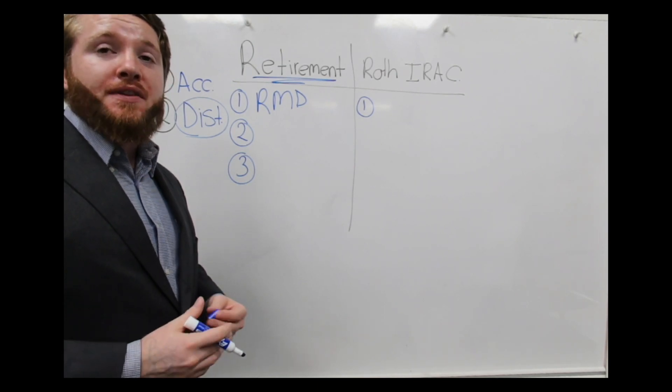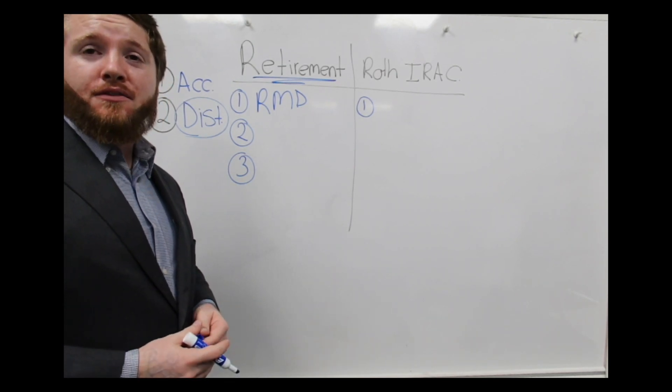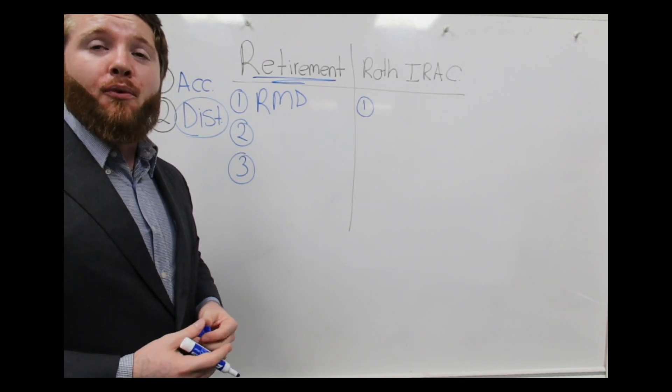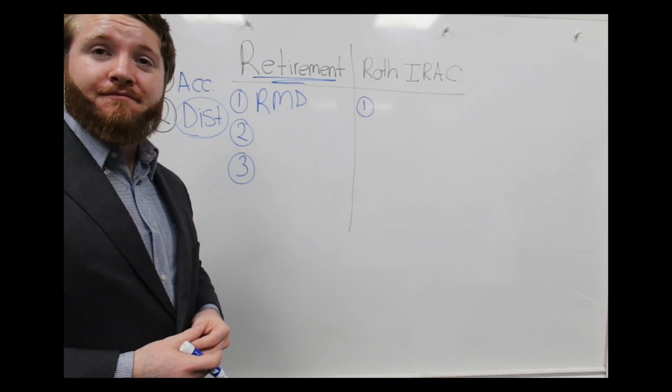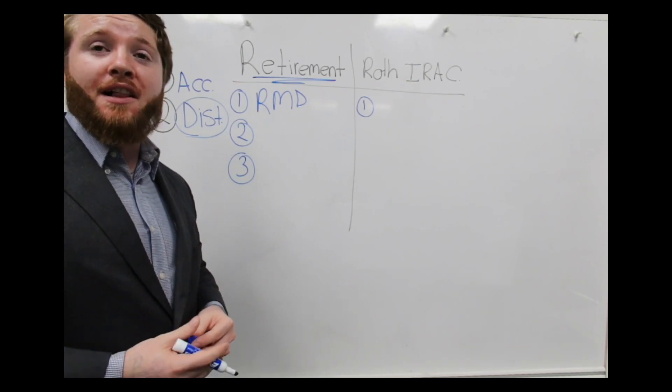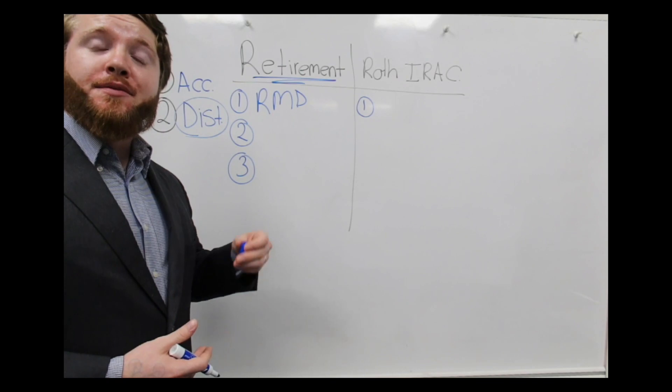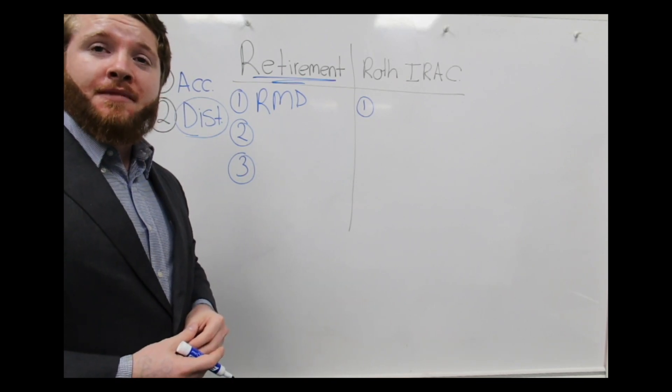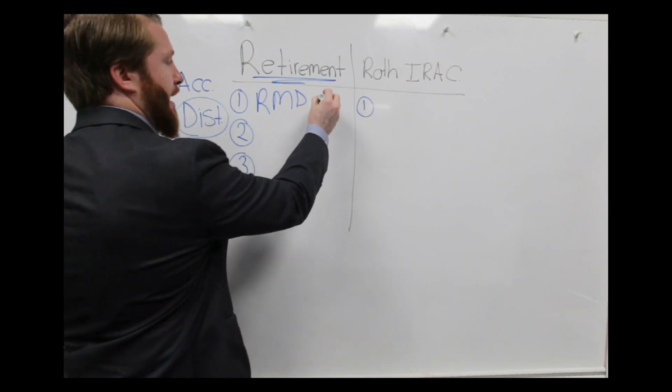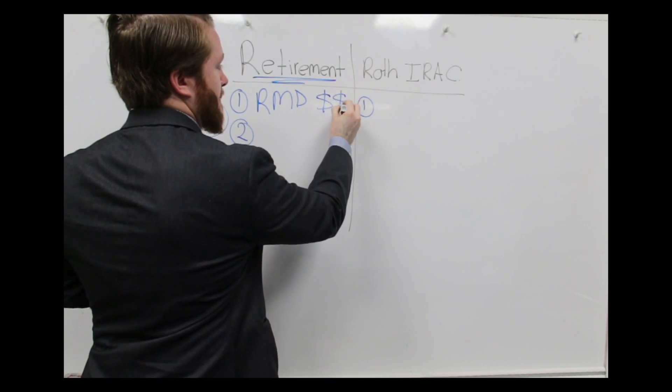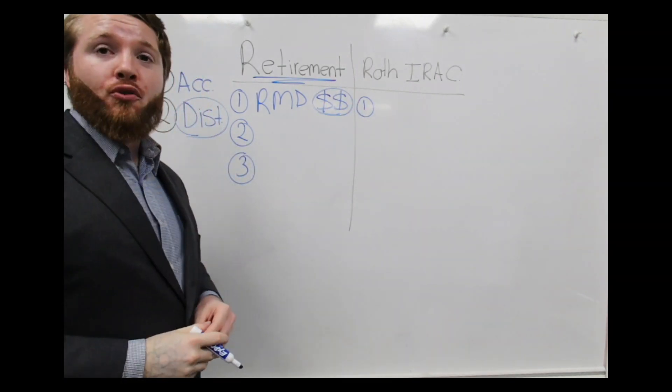And it's a percentage of your account. If you have about a million dollars, you can expect it to be about $45,000 you have to take out. If you have $2 million, about $90,000 you'll have to take out. And that amount keeps going up every year. And the one thing it does is create tax.